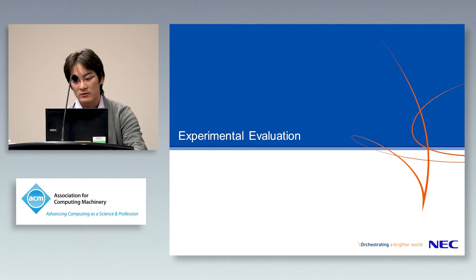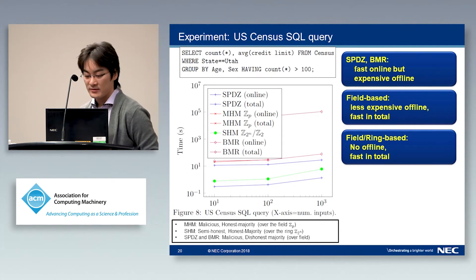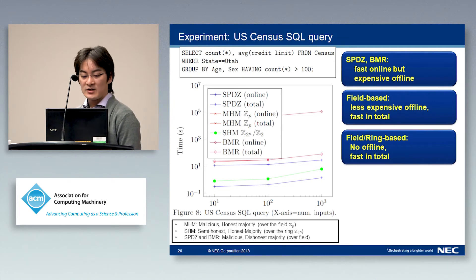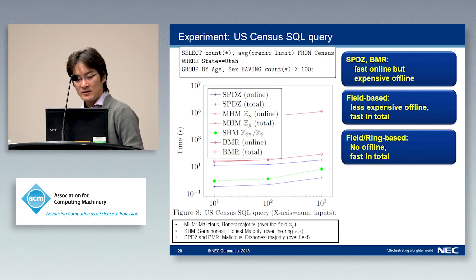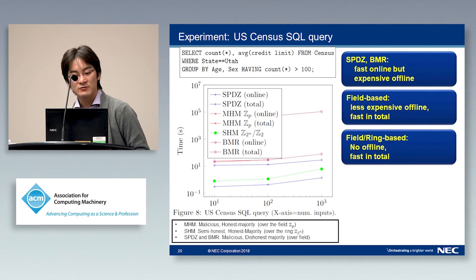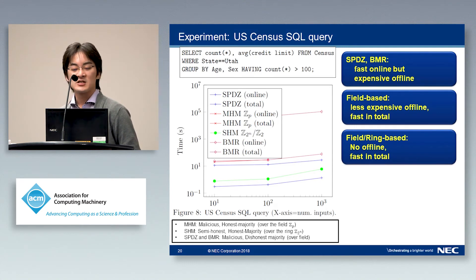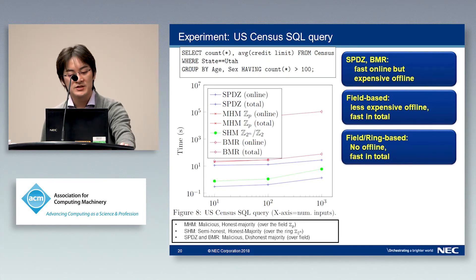To evaluate our toolchain and protocols, we implemented various computations. Here we show the result for a certain SQL query, which is a quite complex computation. We compiled the program for this SQL query using the compilers for each protocol, then executed it on their virtual machines and compared the results. This demonstrates that we can execute on four completely different low-level protocols by writing only a single complex program. The results show that SPICE and BMR are faster in the online phase but much more expensive offline, due to operations such as somewhat homomorphic encryption. On the other hand, honest majority protocols based on secret sharing require less expensive or no offline computation and are faster in total.